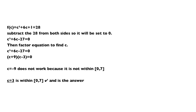Then factor the equation to find C. It factors to (C plus 9)(C minus 3). Setting both factors to 0, C equals negative 9, which does not work because it is not within the interval of 0 and 7. And C equals 3 is within the interval of 0 and 7, so that checks and is the answer.